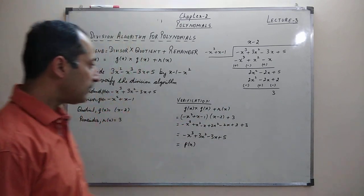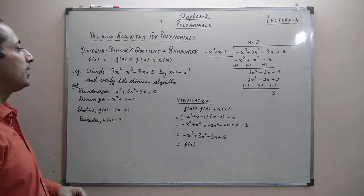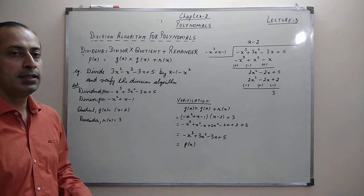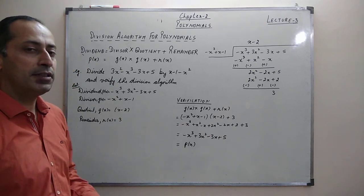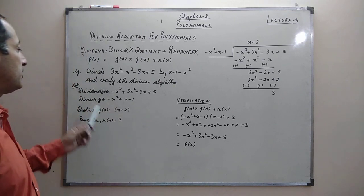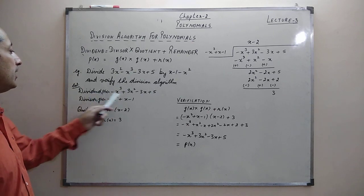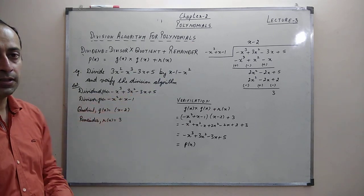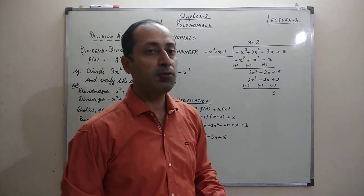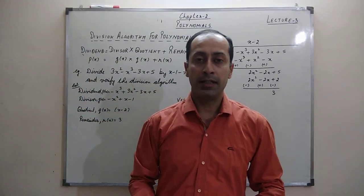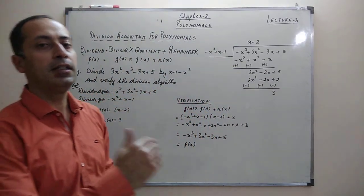Here is an example: divide 3x² - x³ - 3x + 5 by x - 1 - x², and verify the division algorithm. The first thing we should know is which is the dividend and which is the divisor. Obviously, 3x² - x³ - 3x + 5 is the dividend and x - 1 - x² is the divisor. Before dividing two polynomials, we must make sure they are written in standard form, that is, in decreasing order of powers.